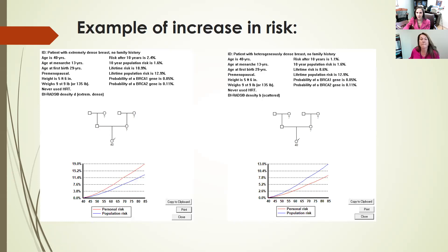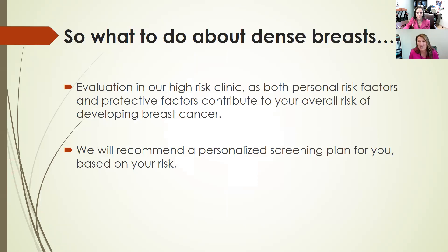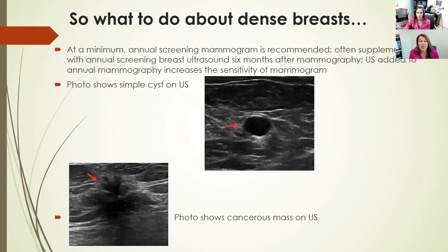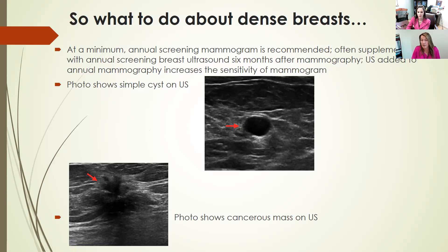When you have dense breasts, what do we do about them? You should have an evaluation in our high-risk clinic because both your personal risk factors and protective factors contribute to your overall risk of developing breast cancer. Each person has individual factors that need to be assessed, and we'll recommend a personalized screening plan based on your risk. At a minimum, when you have dense breast tissue, annual screening mammogram is recommended. But we often supplement that with a full breast screening ultrasound six months later — that increases sensitivity and helps us find interval cancers, something that occurs between that whole year of waiting between mammograms.